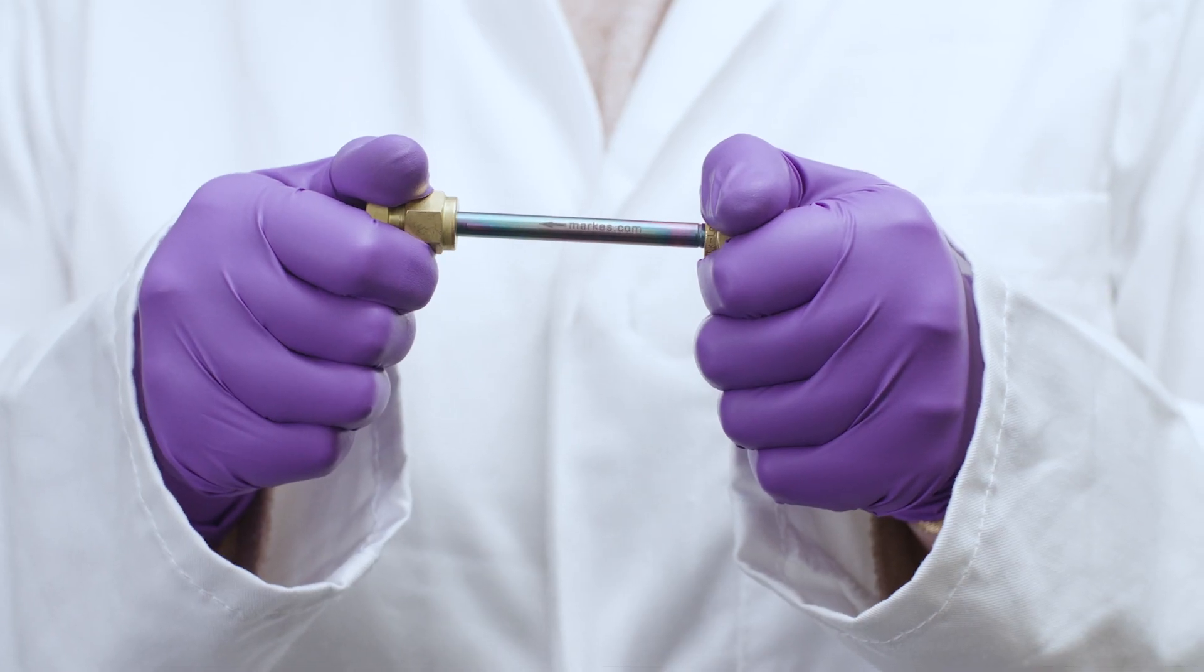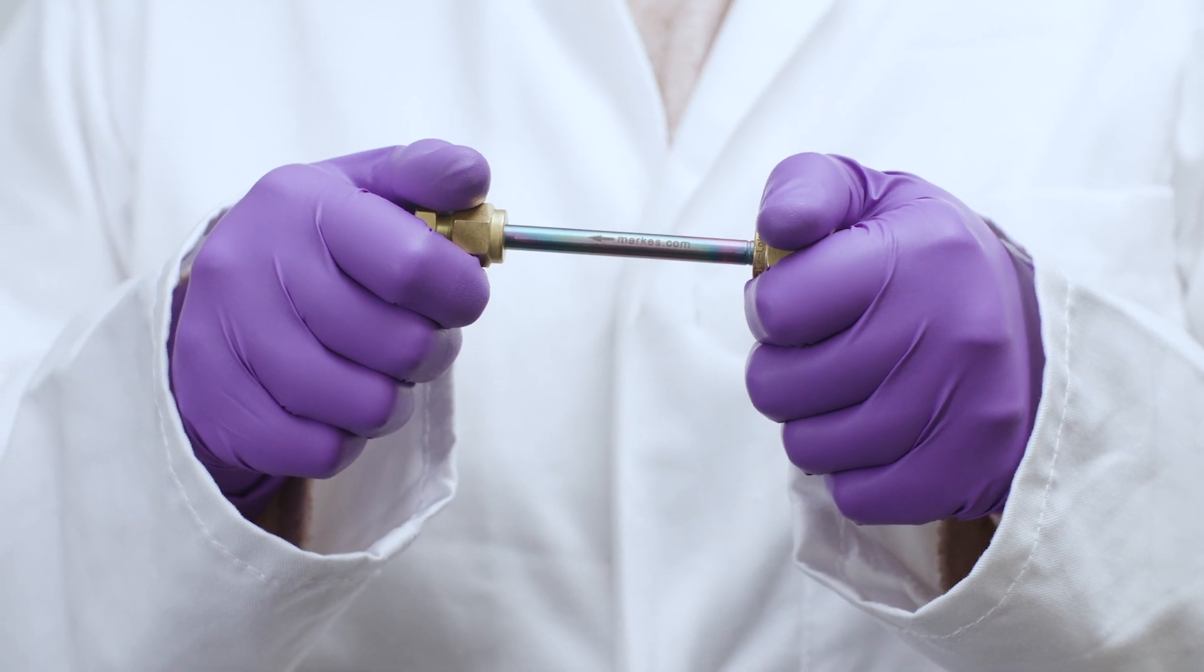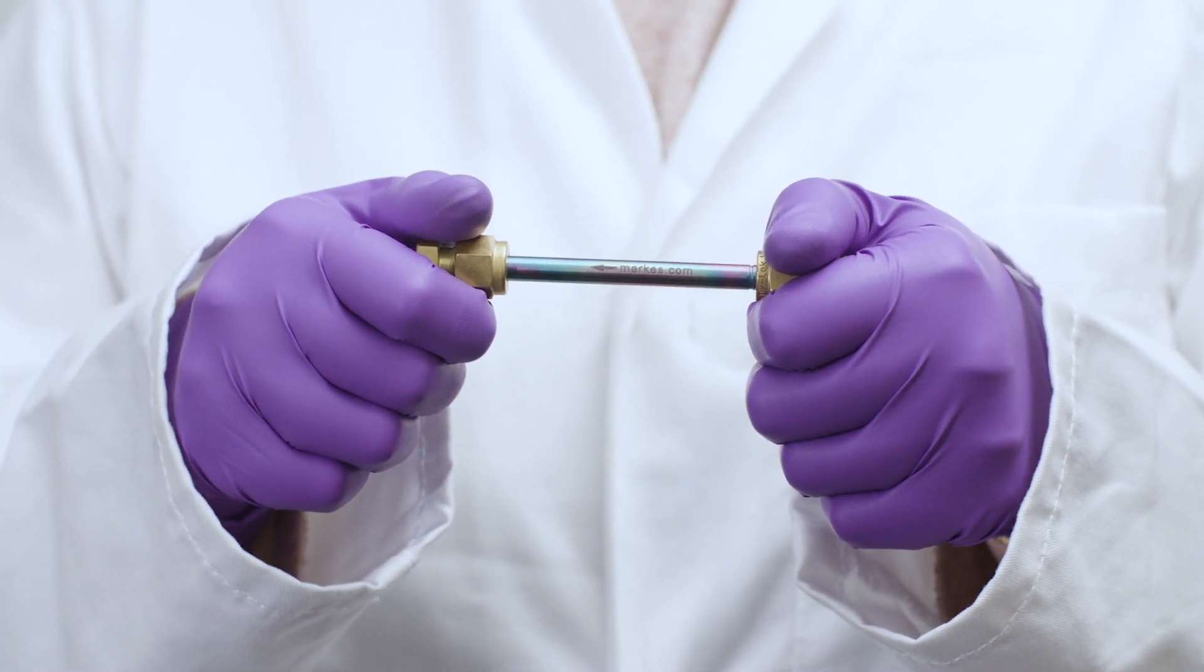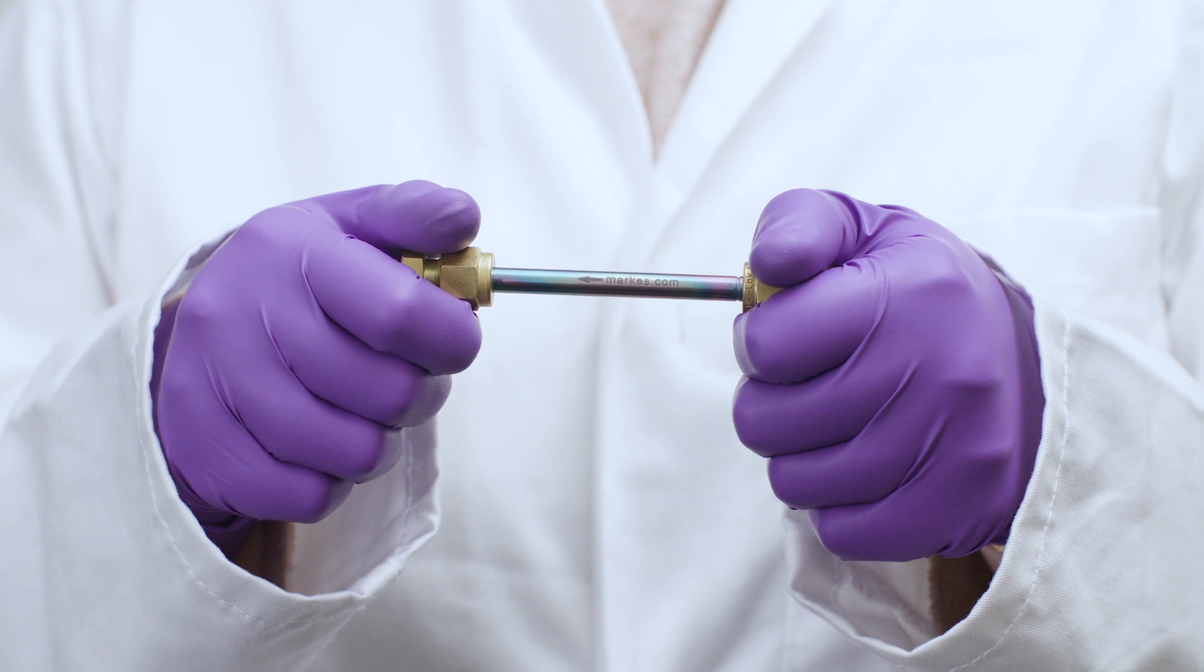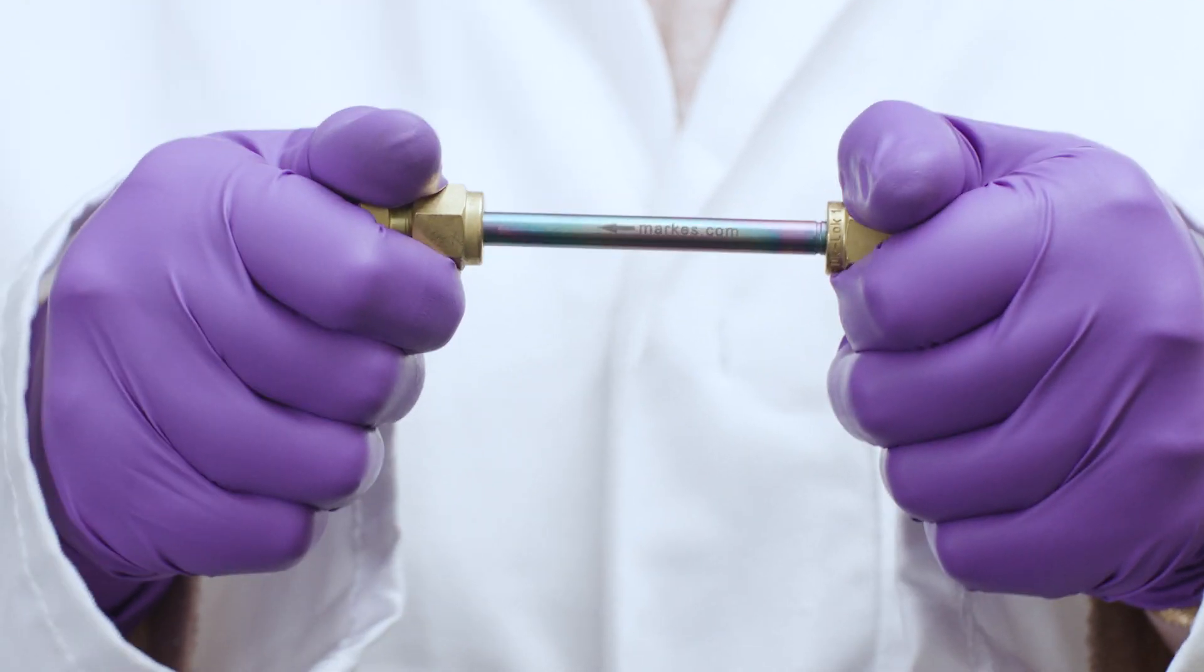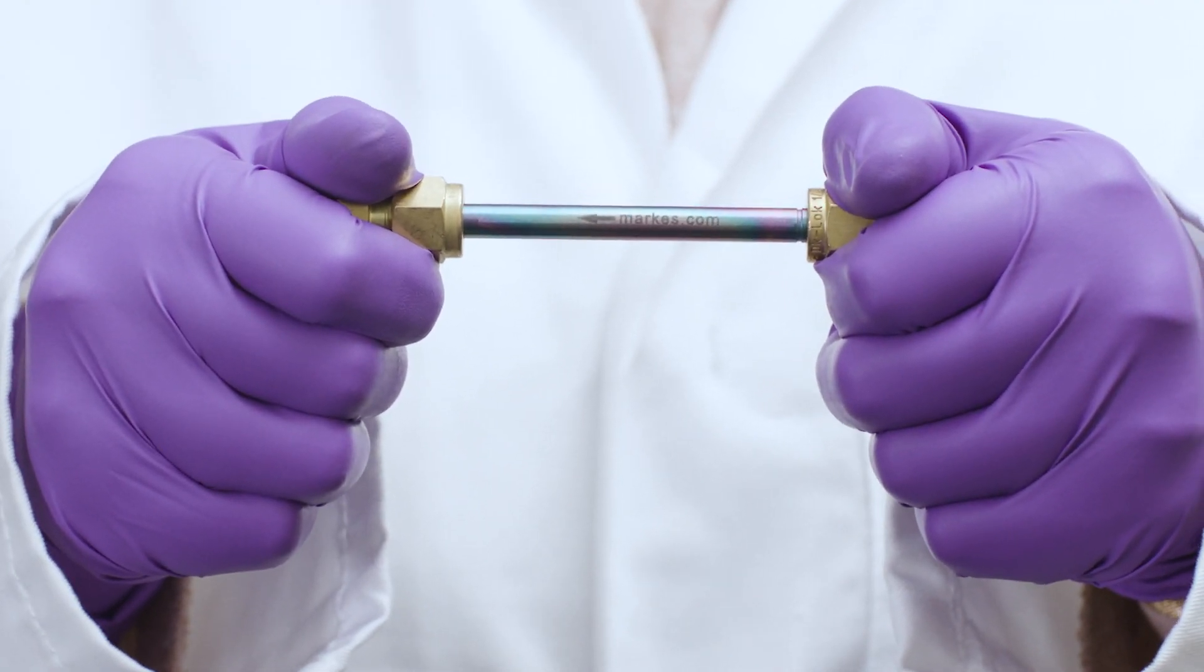To ensure cap tightness, grip the storage caps firmly and attempt to pull from the tube. Any caps that can be removed easily this way are not tight enough and should be re-tightened with the cap lock tool.